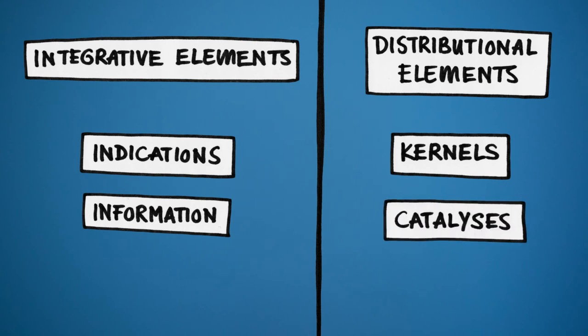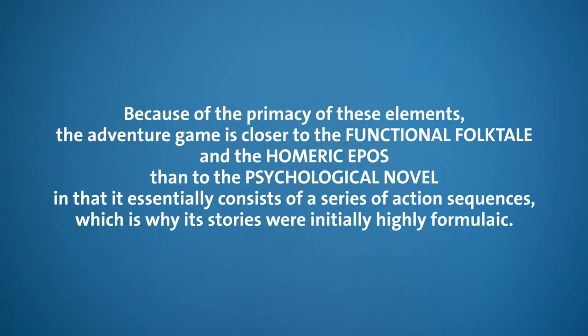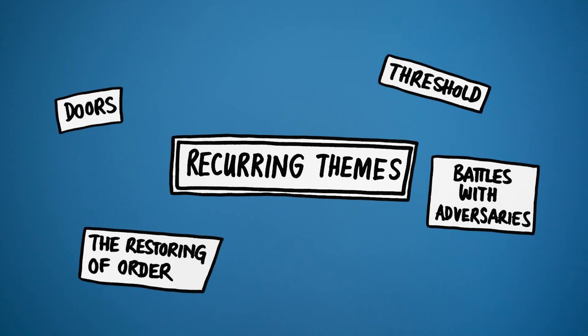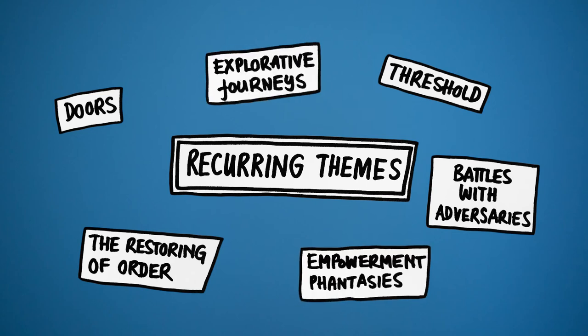And catalysts that only have a chronological function, such as cut scenes or scripted interactive sequences. All interactive elements of an adventure game are distributional. Because of the primacy of these elements, the adventure game is closer to the functional folktale and the Homeric epos than to the psychological novel, essentially consisting of a series of action sequences, which is why its stories were initially highly formulaic. The primacy of distributional elements shapes the narrative repertoire: doors, thresholds, battles with adversaries, restoring order to a world fallen into chaos, empowerment fantasies, explorative journeys to distant locations, and quests to obtain specific items are recurring themes.